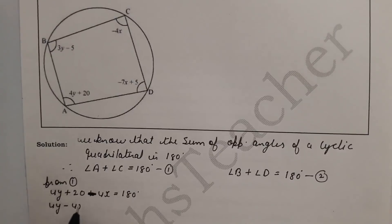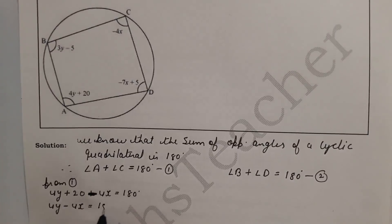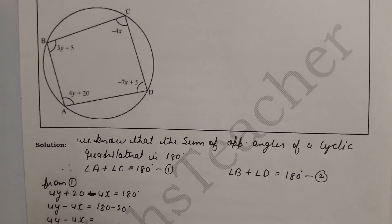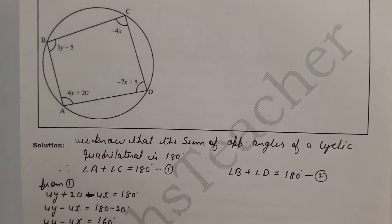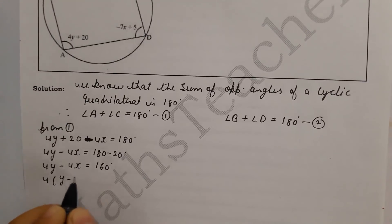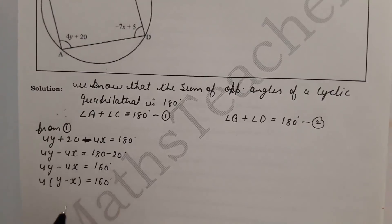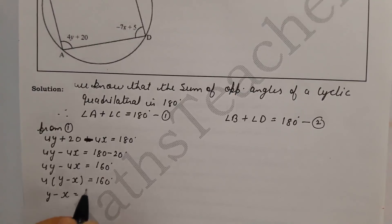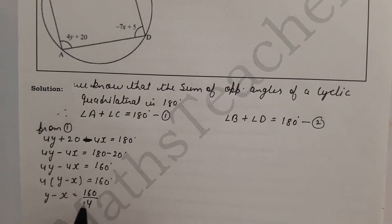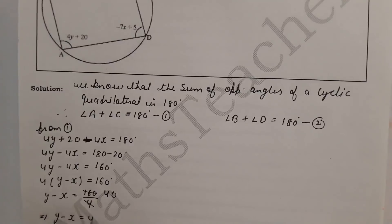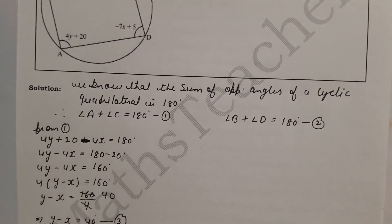After substituting, we get 4y minus 4x equal to 180 minus 20, which is 160°. Both coefficients are 4, so we take 4 as common: y minus x equals 160 divided by 4. Since 4 times 40 is 160, our equation 3 is: y minus x equals 40°.